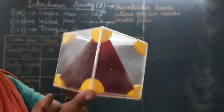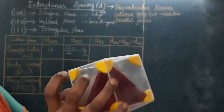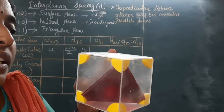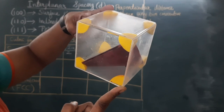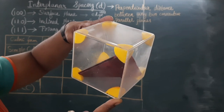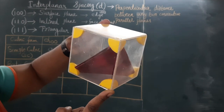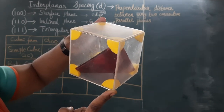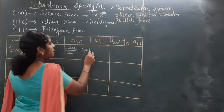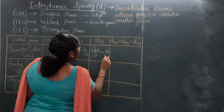That means there are four parallel planes possible over the body, giving three perpendicular distances. Here, we have to consider the body diagonal. The body diagonal in a cubical structure is root 3 · A. With four planes there are three parts, so the interplanar distance between two adjacent 111 planes is body diagonal divided by 3, that is root 3 · A divided by 3, which equals A by root 3.